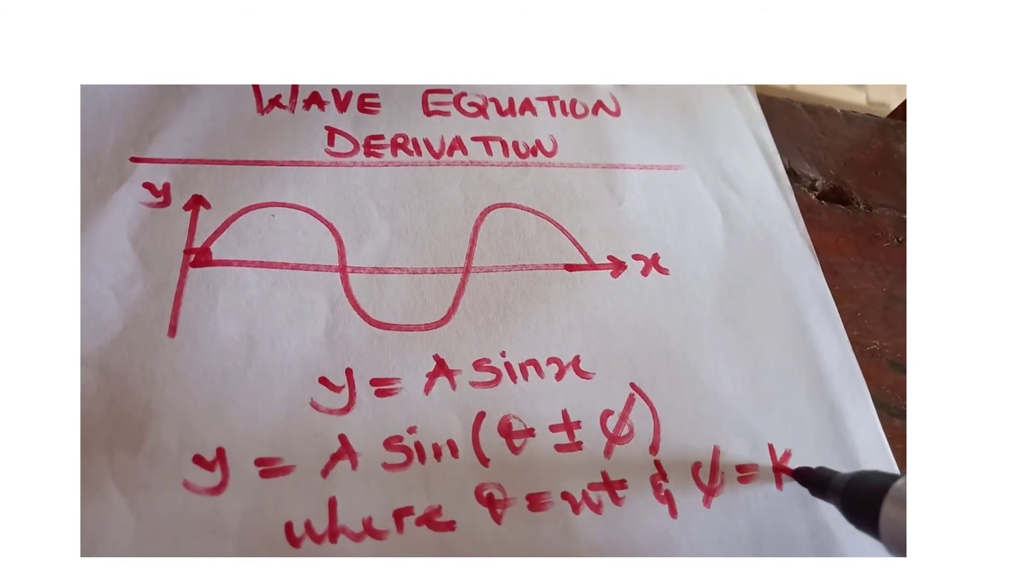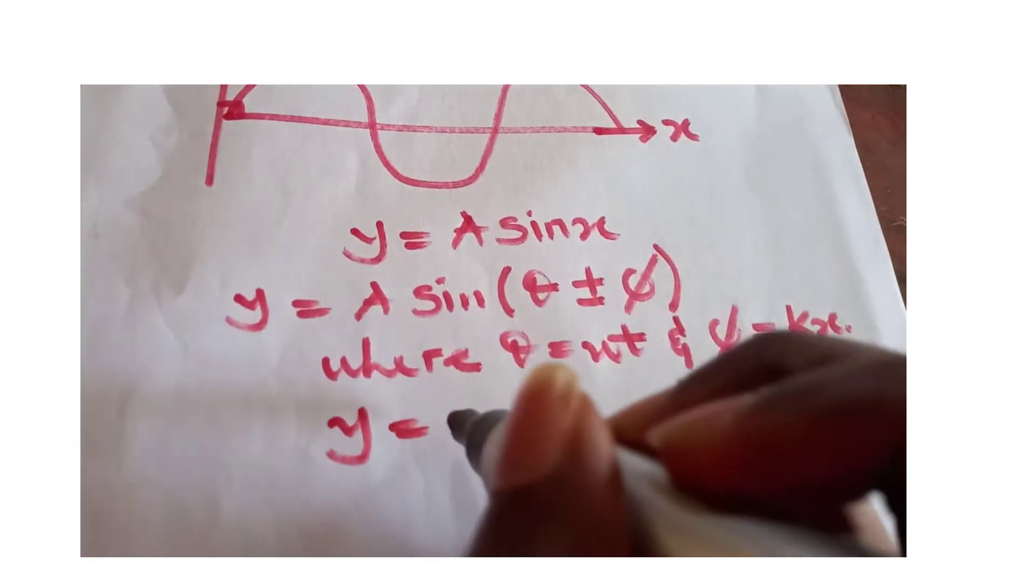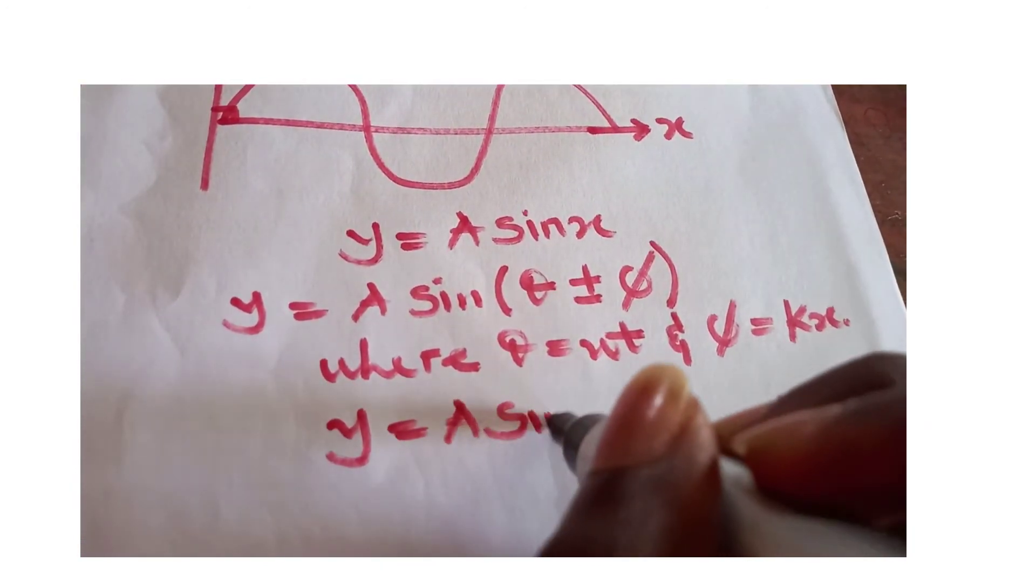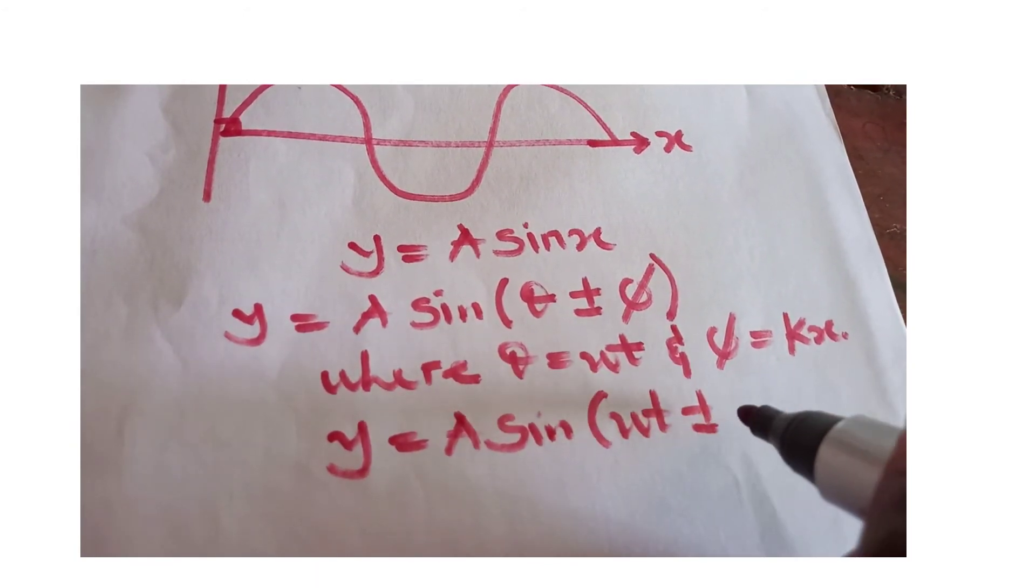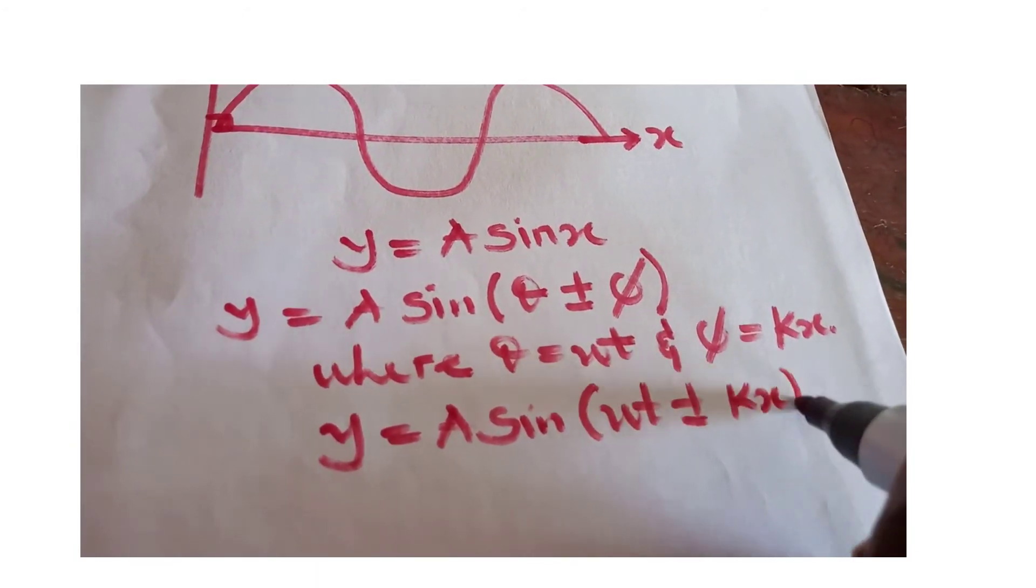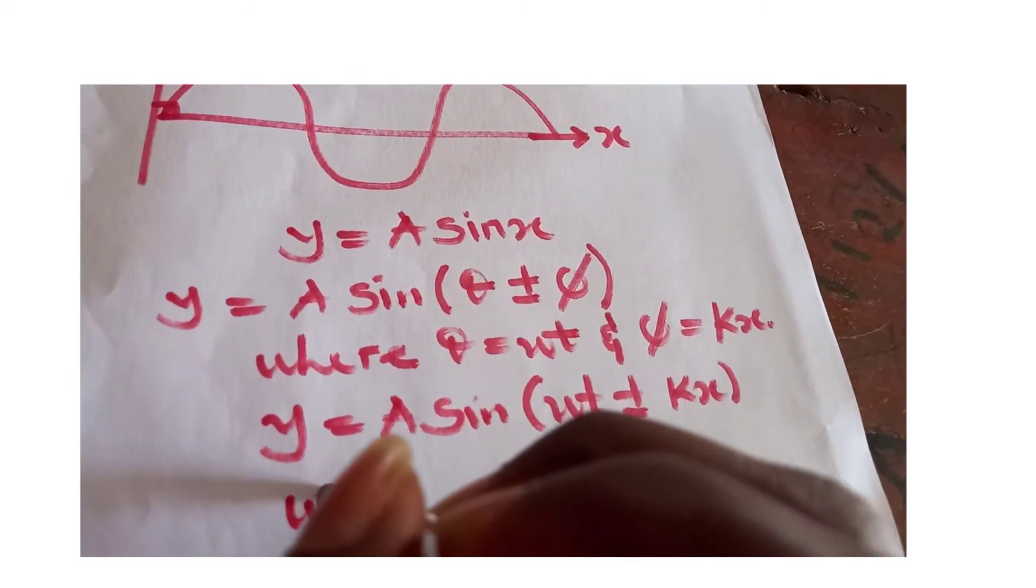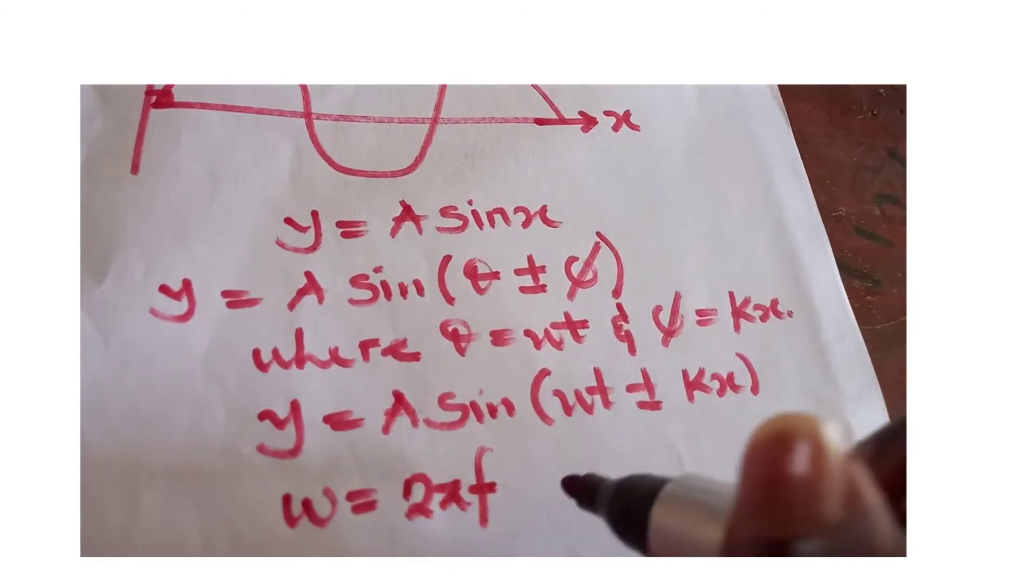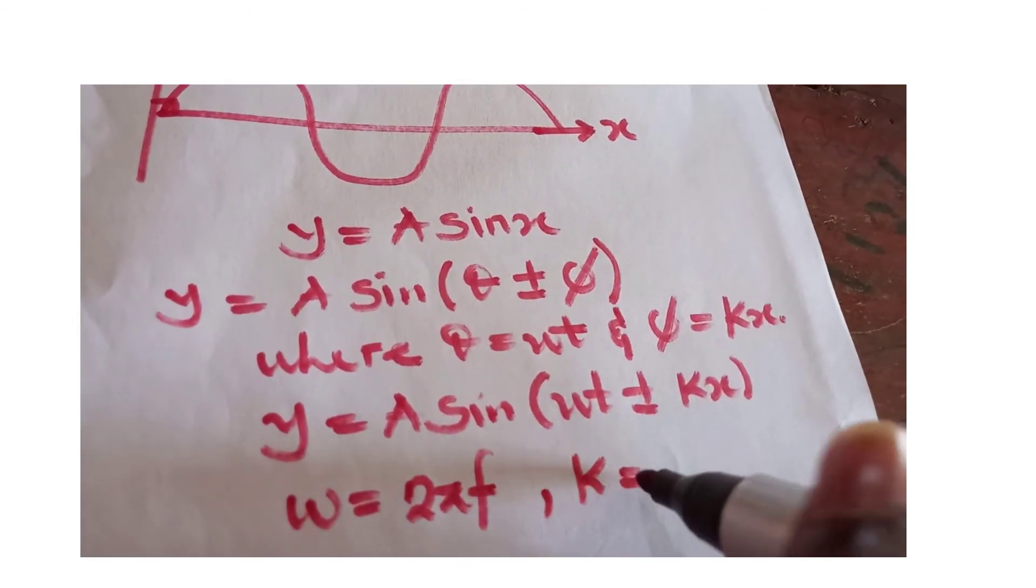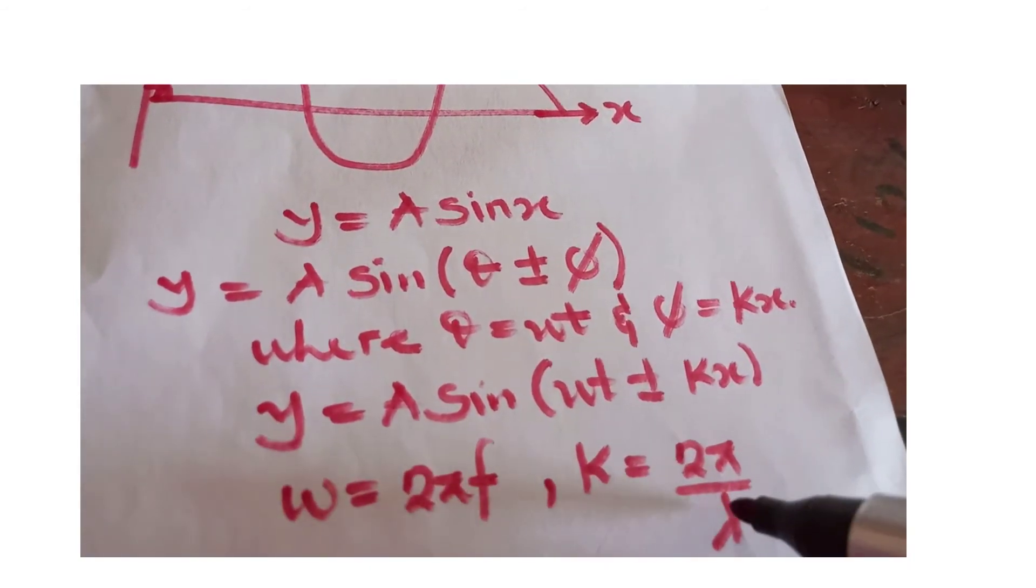Phi is equal to kx. So we have y equals A sine omega t plus or minus kx. Omega is 2πf and k is 2π over lambda, that's our wavelength.